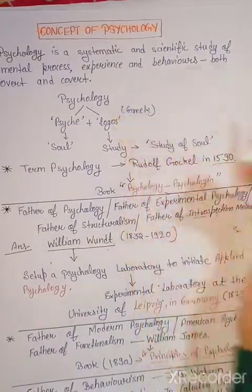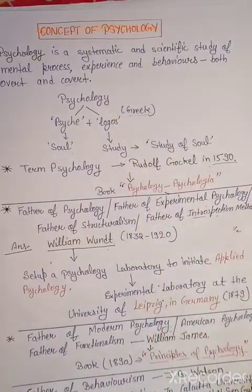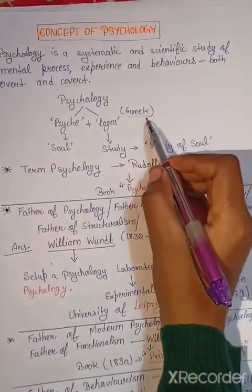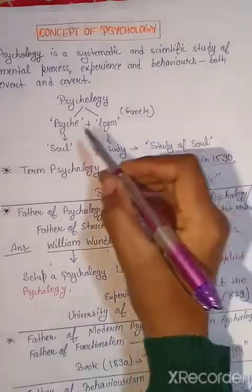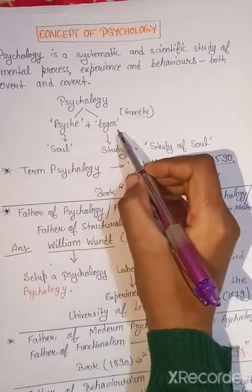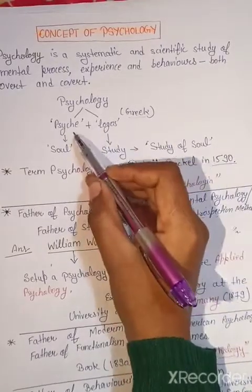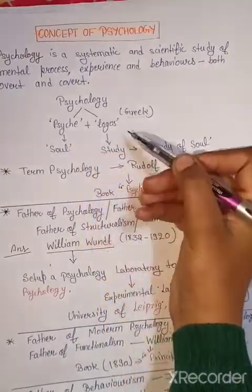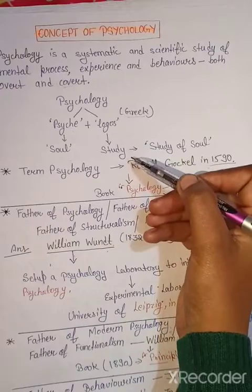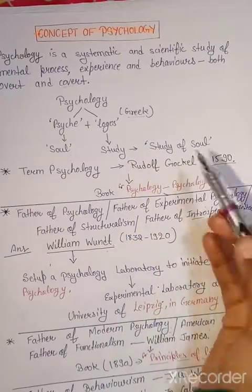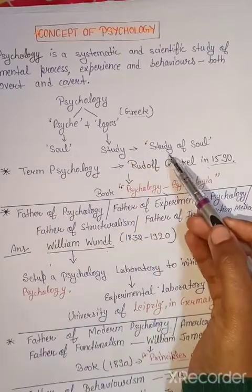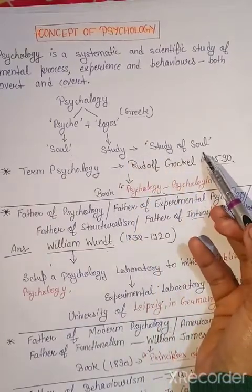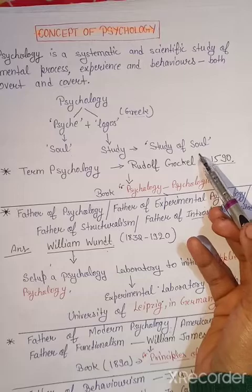तो psychology word कहां से लिया गया है? यह Greek word से लिया गया है — psyche plus logos. जिसमें psyche का mean होता है soul और logos का mean होता है study. Basically, it is the study of soul, and this is the older definition of psychology.